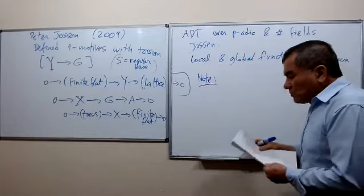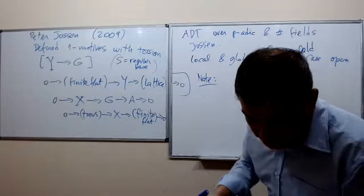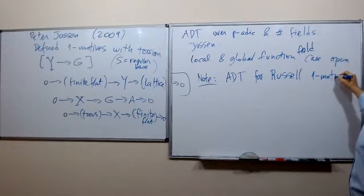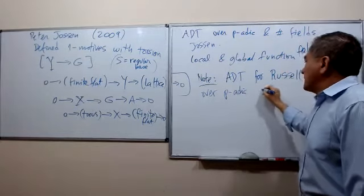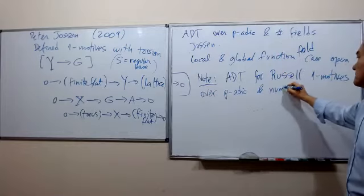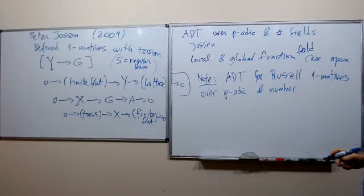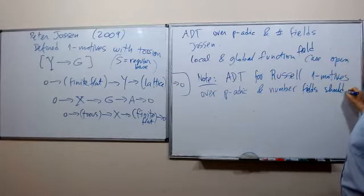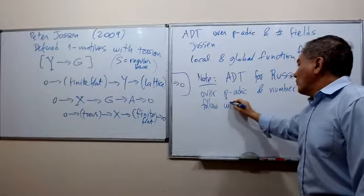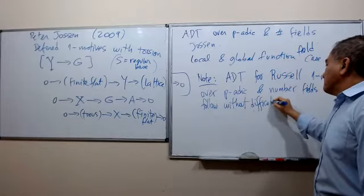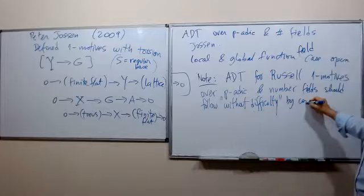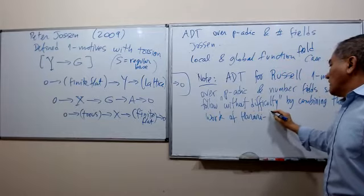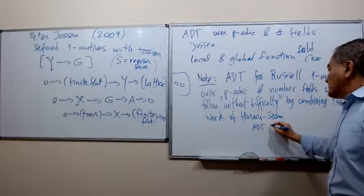It should be possible that arithmetic duality theorems for Russell's 1-motives over p-adic and number fields should follow without difficulty — let's be optimistic — by combining the work of Harari and Szamuely on arithmetic duality for Deligne 1-motives with the work of Joseph.